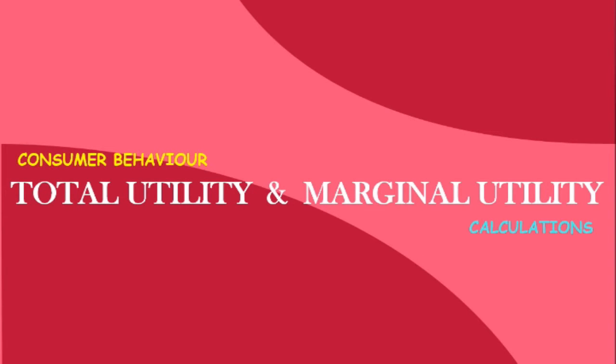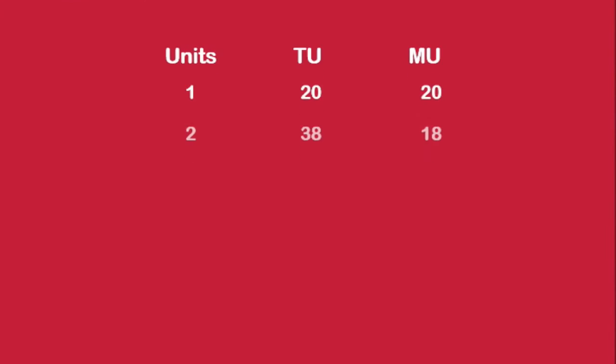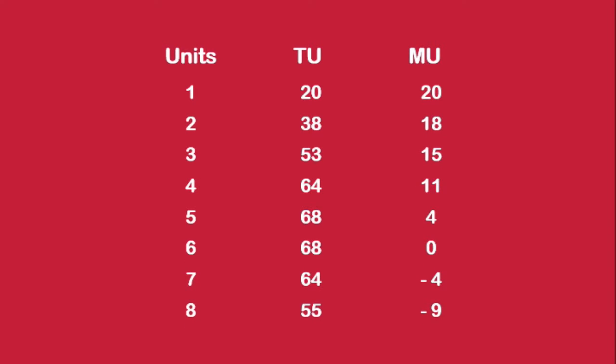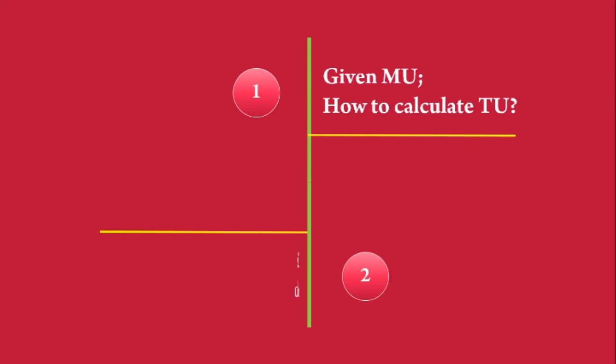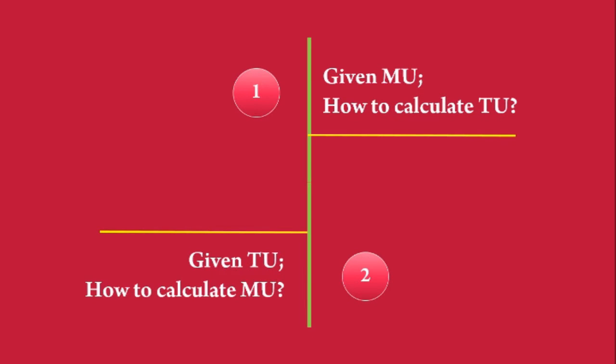In Part 1 of Consumer Behavior, we learned to develop a utility schedule, which reflects consumer behavior when a consumer consumes a commodity continuously. In Part 2, we shall learn: given the Marginal Utility, how to calculate Total Utility, and given the Total Utility, how to calculate Marginal Utility.